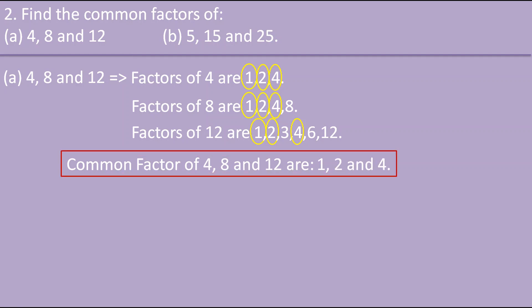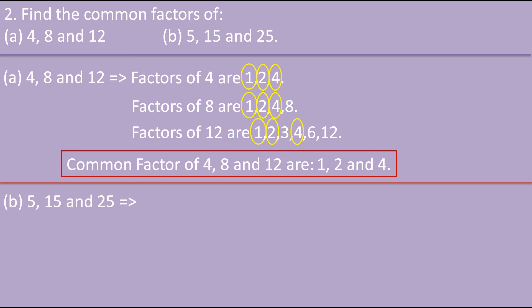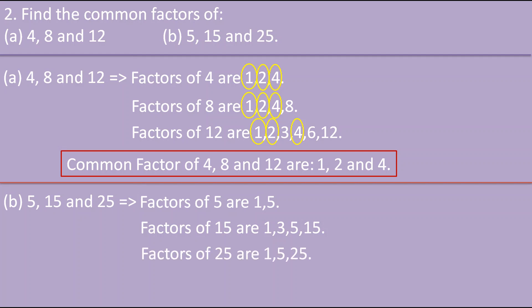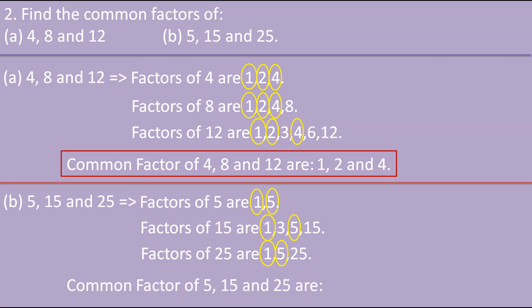For 5, 15 and 25: the factors of 5 are 1 and 5; the factors of 15 are 1, 3, 5 and 15; and the factors of 25 are 1, 5 and 25. Here 1 and 5 are common. Therefore the common factors of 5, 15 and 25 are 1 and 5.